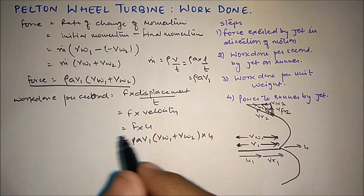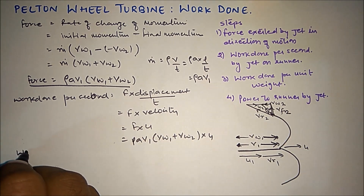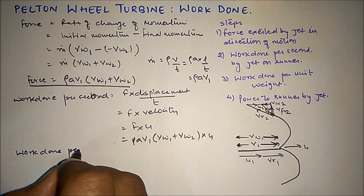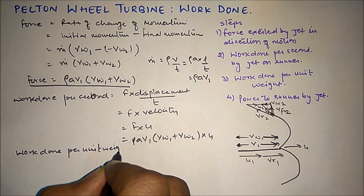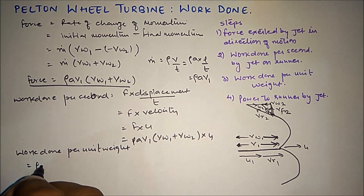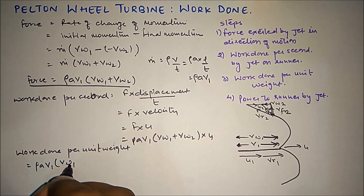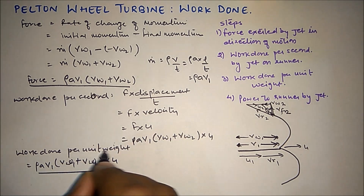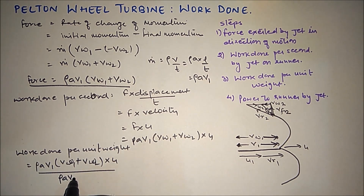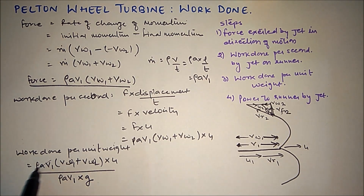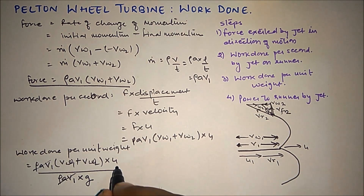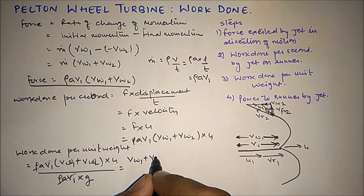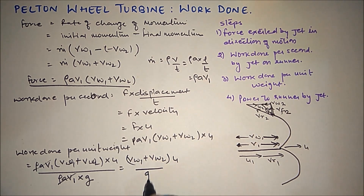If we need to find the work done per unit weight, we divide by the weight. Weight equals mass times g, and mass flow rate is rho*A*V1, so rho*A*V1 cancels out. We are left with (Vw1 + Vw2)*U divided by g. This is the work done per unit weight.